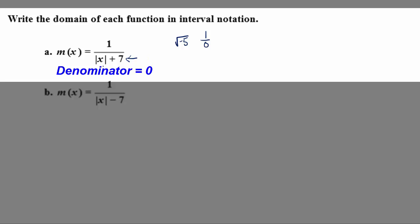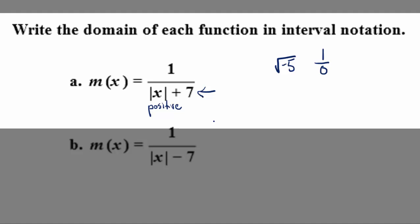Now looking at this denominator, absolute value of x is going to be a positive number, and then we're going to add a positive number to it. You can't add two positive numbers and ever get zero. So I can tell you right now that there are no restricted values.